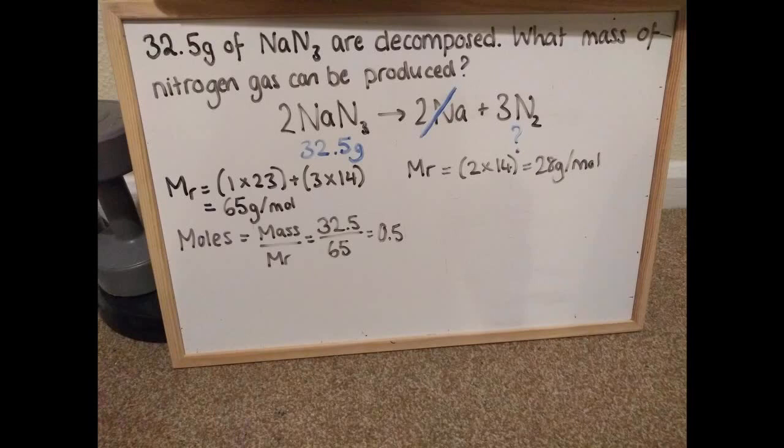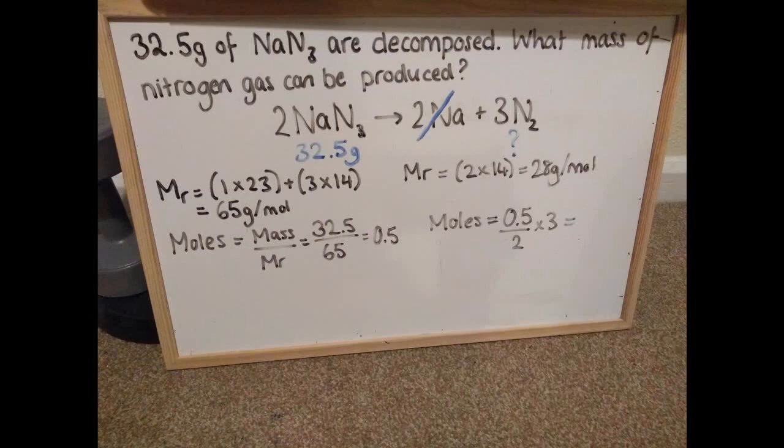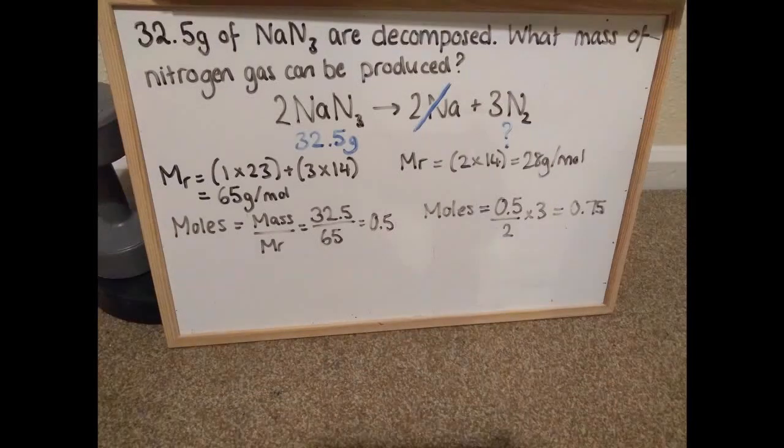Now for lots of you that's probably quite a straightforward calculation that you could just do in your head. 50% more than 0.5 is going to be 0.75. But let's look at how we actually got there because sometimes you're not just going to be able to look at these and do them in your head. So what I do is I take that 0.5 moles, remember that's how many particles of sodium azide I've got. And I look at the balanced symbol equation and sodium azide has a 2 in front of it. So I'm going to divide my 0.5 by 2. And then the thing that I'm trying to work out, the nitrogen, the coefficient there is 3. So I'm going to now multiply my answer by 3. So 0.5 divided by 2 times by 3, that gives me 0.75 moles.